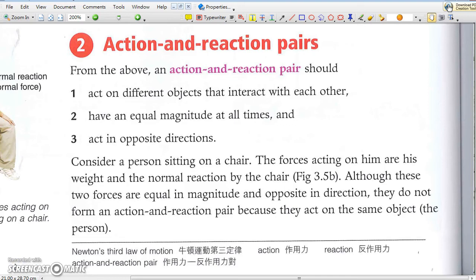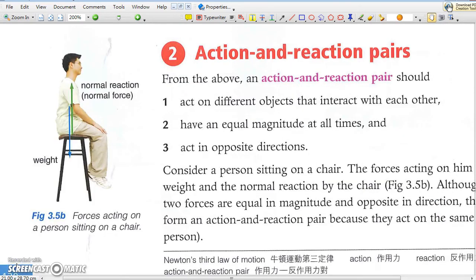2. Action and Reaction Pairs. For the man sitting on a chair, weight is the gravitational attraction on the man by the earth. The reaction should be the gravitational attraction on the earth by the man. On the other hand, the normal reaction is the supporting force on him by the chair. Its reaction should be the push on the chair by the man. In other words, the normal reaction does not form an action-reaction pair with its weight.